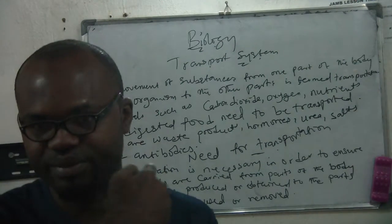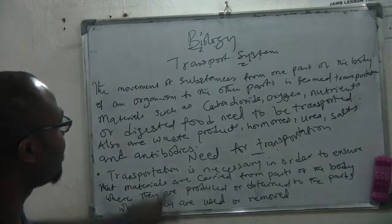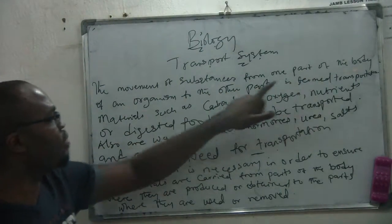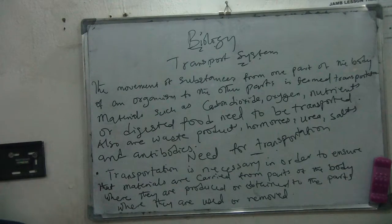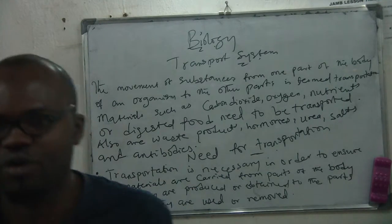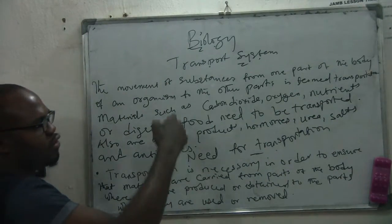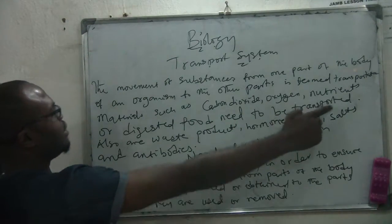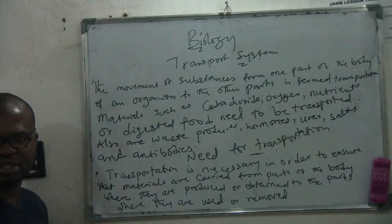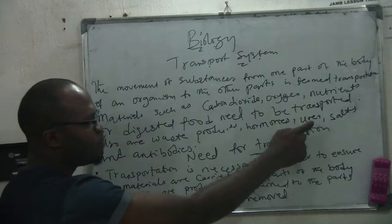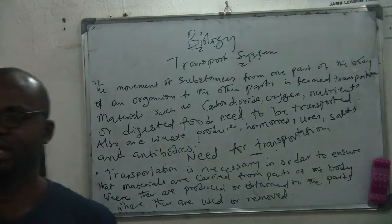Transportation in biology is different from transportation in real life like driving from one city to another. In biology it is simply the movement of substances from one part of the body to another. Materials that are transported include carbon dioxide, oxygen, nutrients, digested food, waste products, hormones, urea, salts, and antibodies. All these things need to be transported.